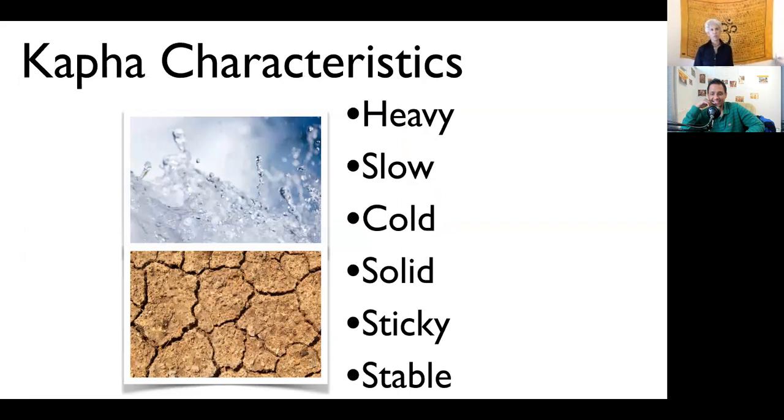Let's go through kapha characteristics. Water and earth are the heaviest elements. Kapha food will be heavy. After you eat it, you'll feel slower, which could be nice. At nighttime you can have something more kapha and it'll be pacifying. Kapha elements are cold. You go and step on the ground in the morning mist, you're going to find it's cold. Water takes a lot of heat and energy to raise the temperature.